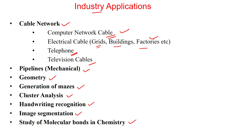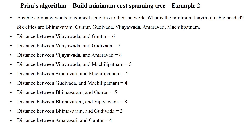We can use the minimum cost spanning tree in different applications, which may be built using Prim's algorithm or Kruskal's algorithm. Based on the application of minimum cost spanning tree, we are going to implement Prim's algorithm to establish a cable network between six cities. The question is: what is the minimum length of cable required to connect these six cities? The distances between all six cities are given in the problem statement.